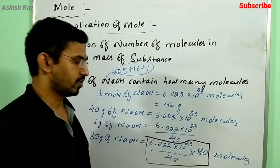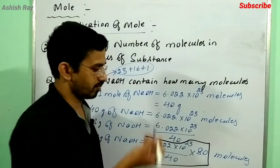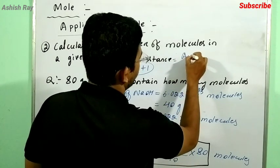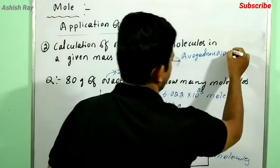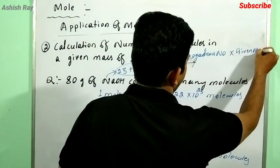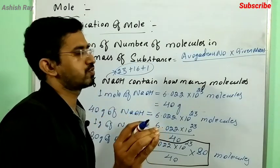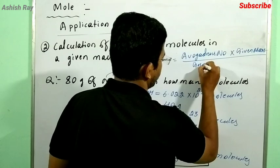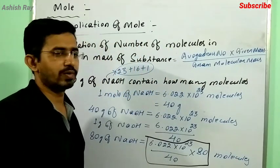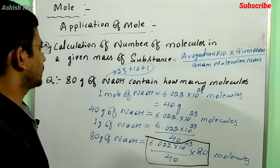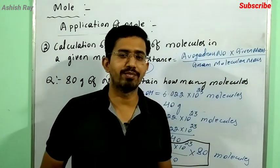From this solution we can derive the formula. The number of molecules in a given mass of a substance equals Avogadro's number into given mass divided by gram molecular mass. Here, 80 is the given mass and 40 is the gram molecular mass of sodium hydroxide.